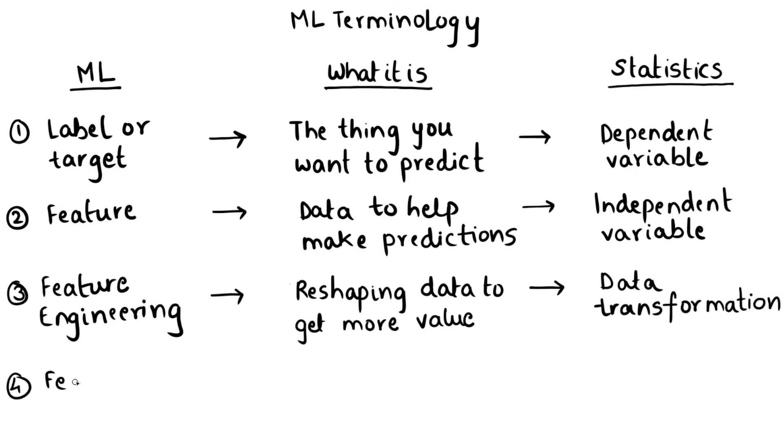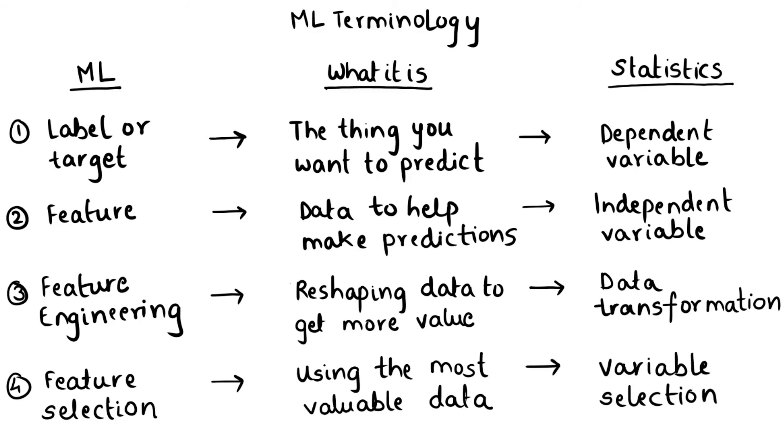And then finally we have feature selection. Feature selection is an exercise of determining what is the most valuable data in your data set. So here we are trying to figure out all the variables that matter and that have the greatest influence on the thing that we are trying to predict, which is our label or target.